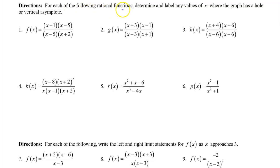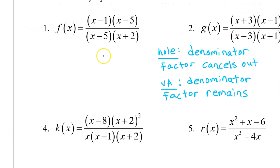For each of the following rational functions, determine and label any values of x where the graph has a hole or a vertical asymptote. Vertical asymptotes and holes both stem from the denominator, but we get a hole when the denominator factor cancels out, and we get a vertical asymptote when a denominator factor remains.